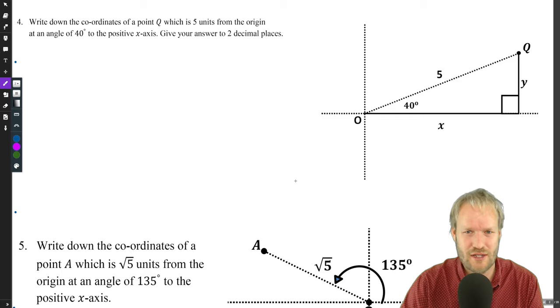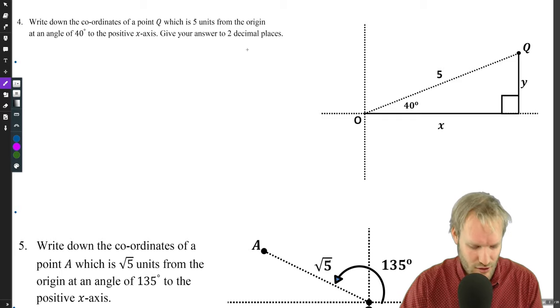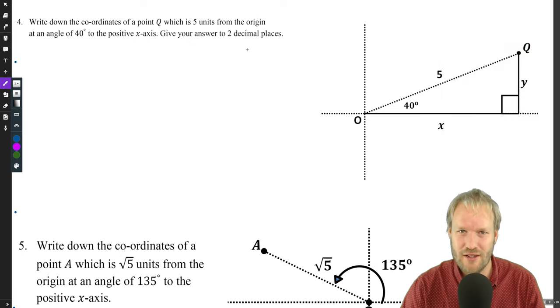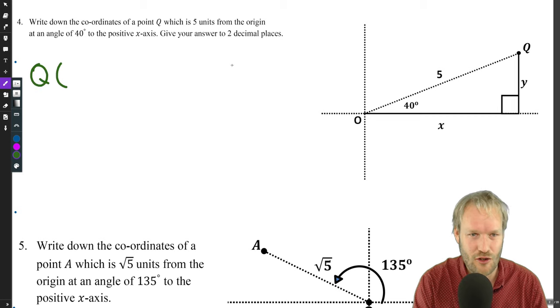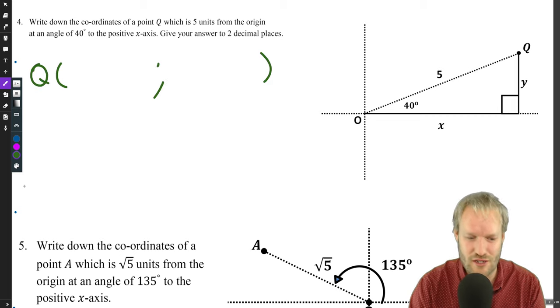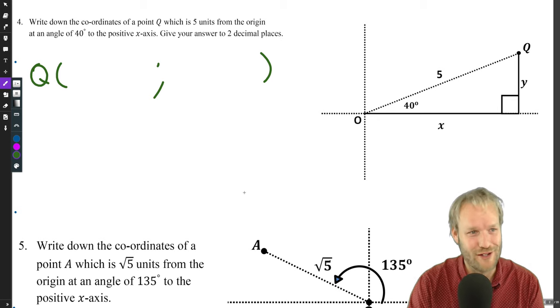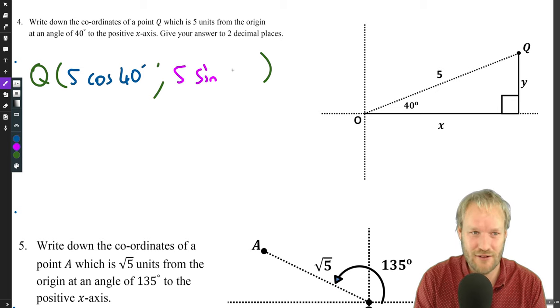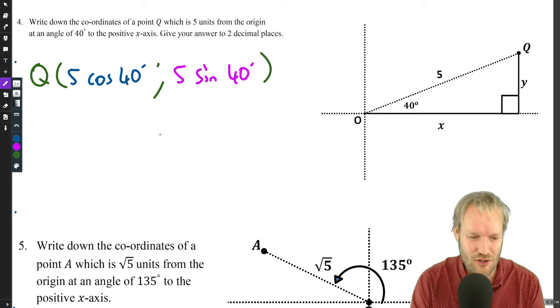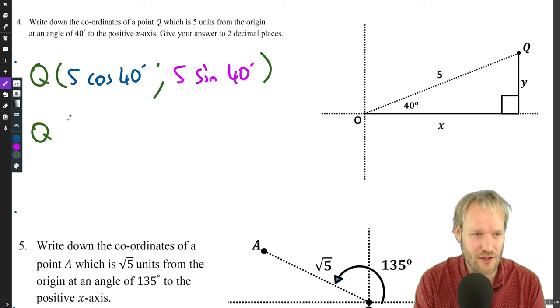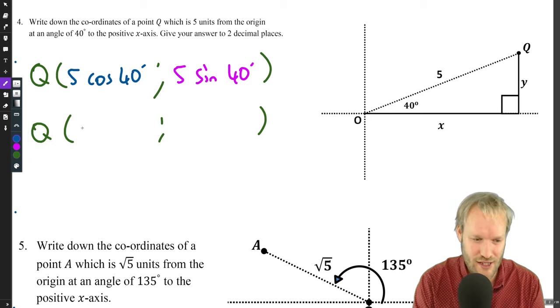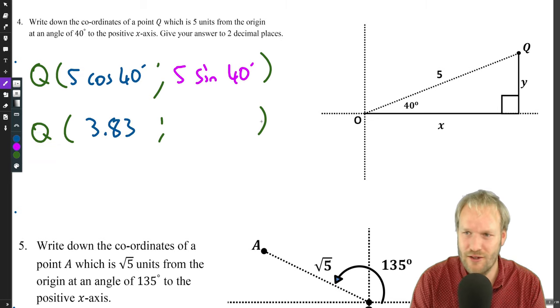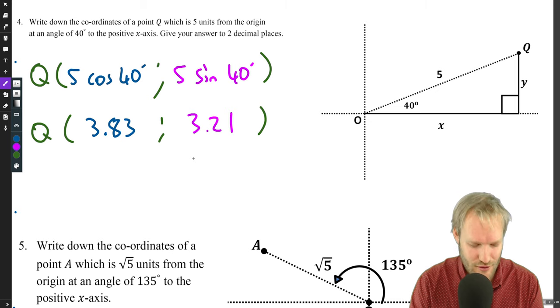Next example looks the same, it says to two decimal places. The question is the same as what we've just done. This was R cos theta and the y value was R sin theta. It's at two decimal places so plug those straight into the calculator. The x value is 5 times cos 135, which is 3.83, and the y value is 3.21.